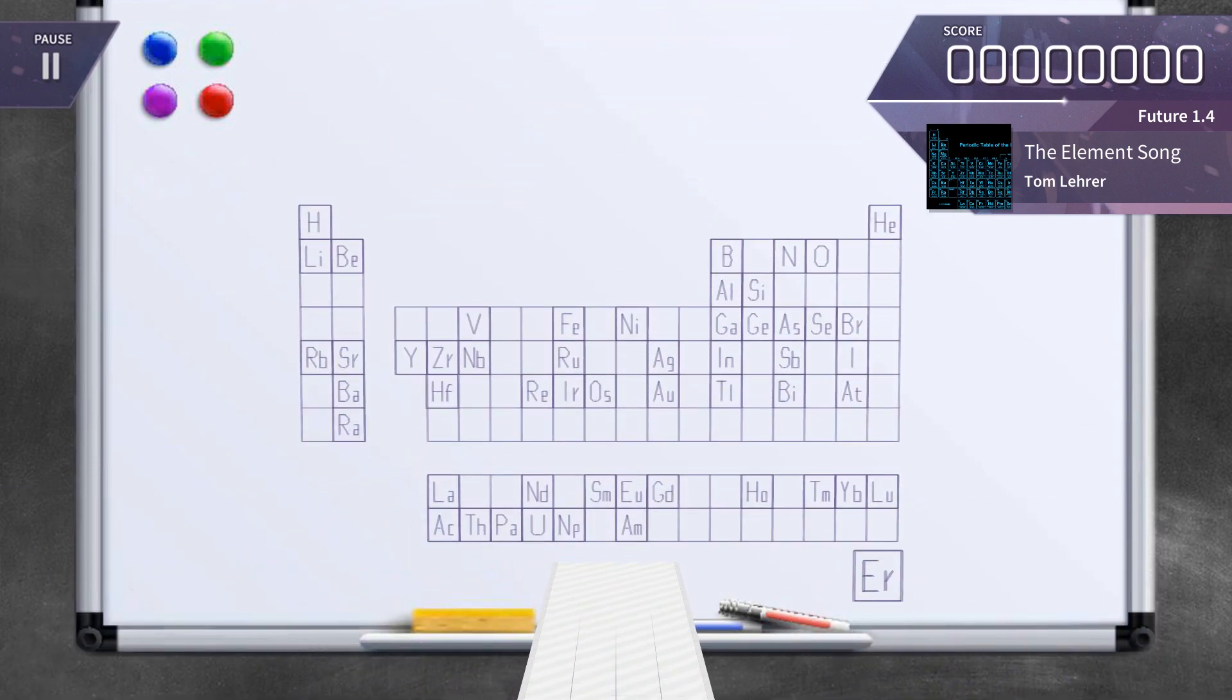There's holmium, and helium, and hafnium, and erbium, and phosphorus, and francium, and fluorine, and terbium, and manganese, and mercury, molybdenum, magnesium, dysprosium, and scandium, and cerium, and cesium.